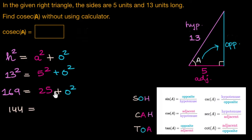And 25 minus 25 would be 0, so we will be left with O squared over here. On taking the principal square root of 144, we will get the length of our opposite side as 12 units. So the length of this side is 12 units.